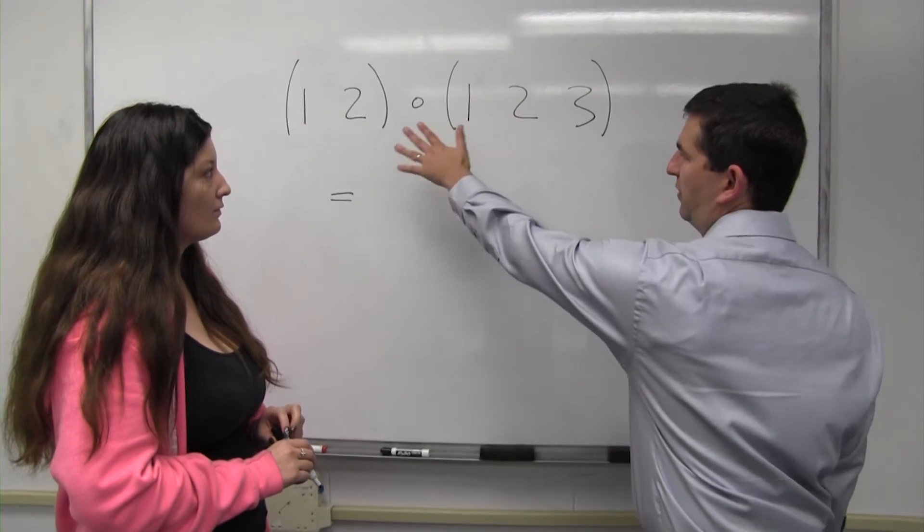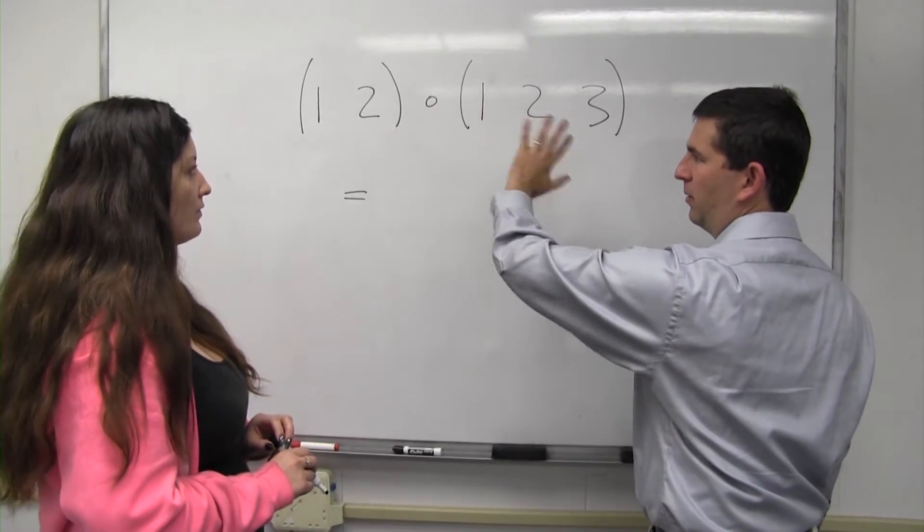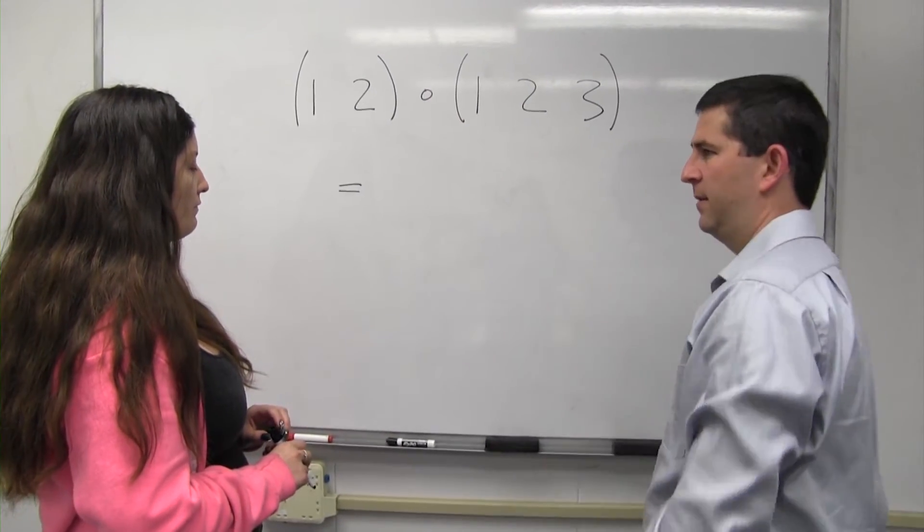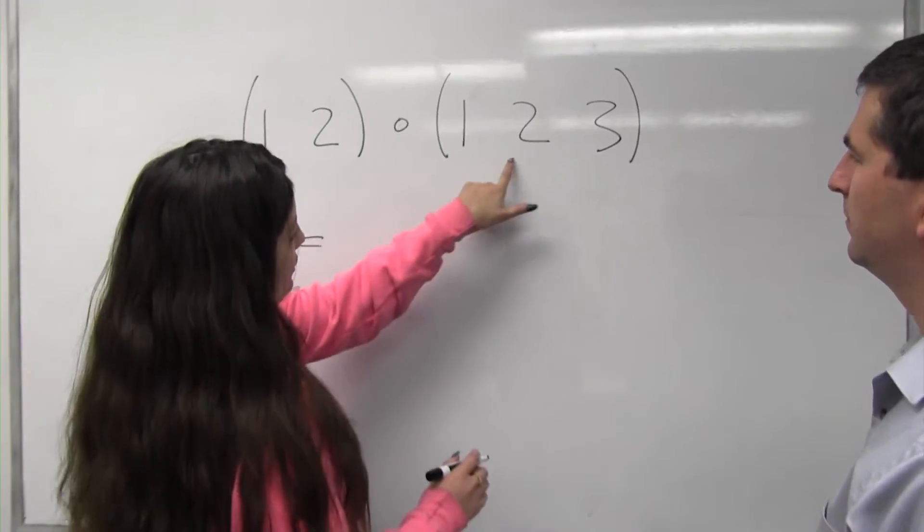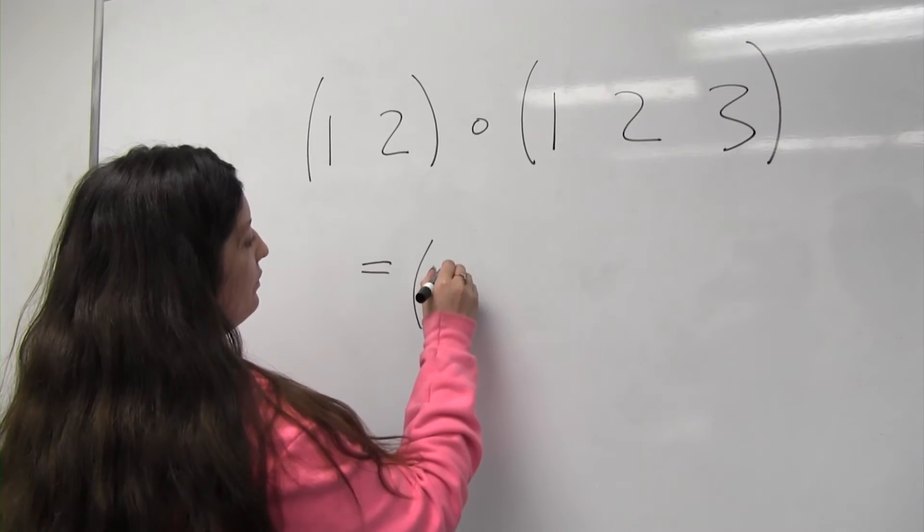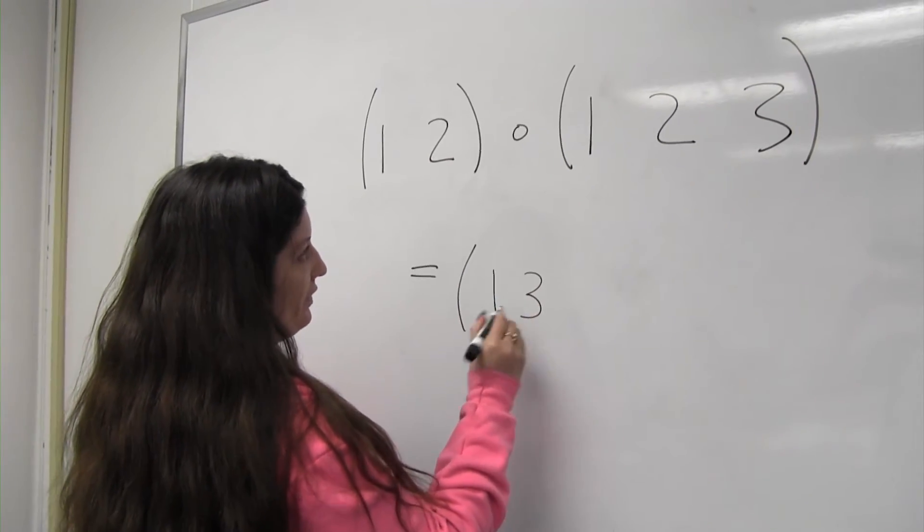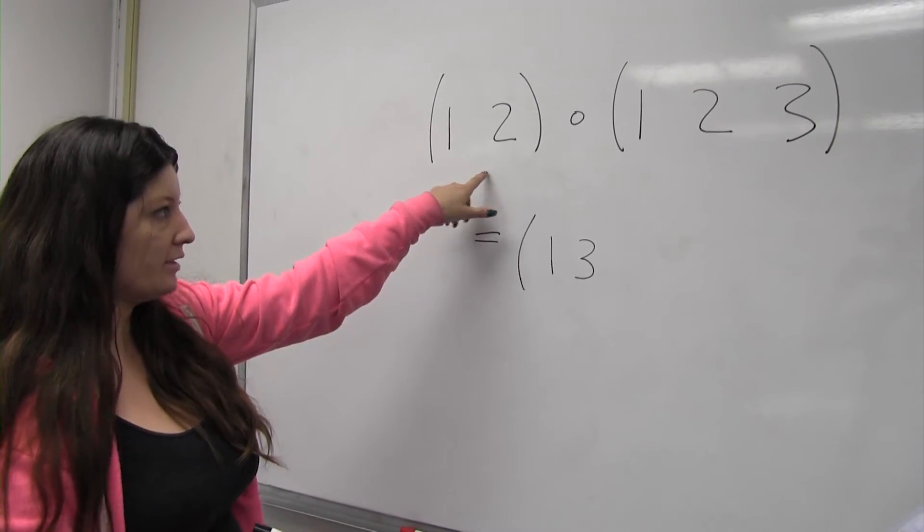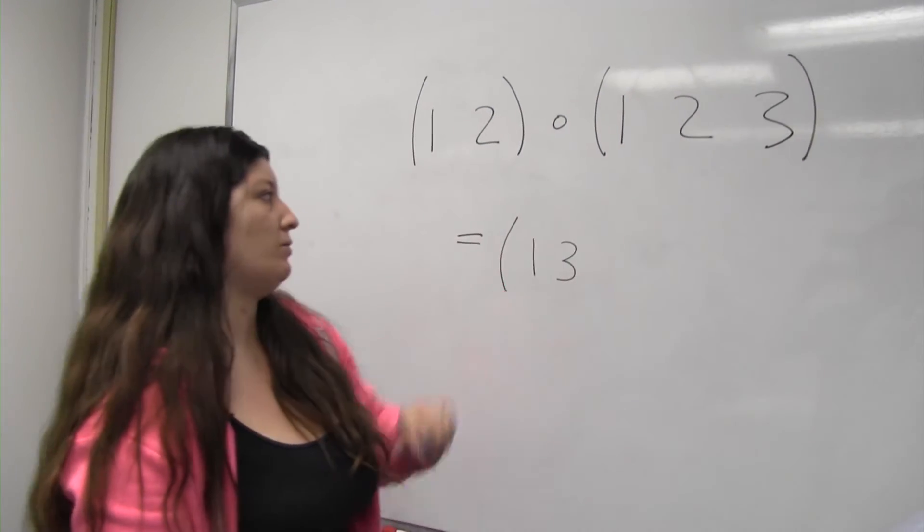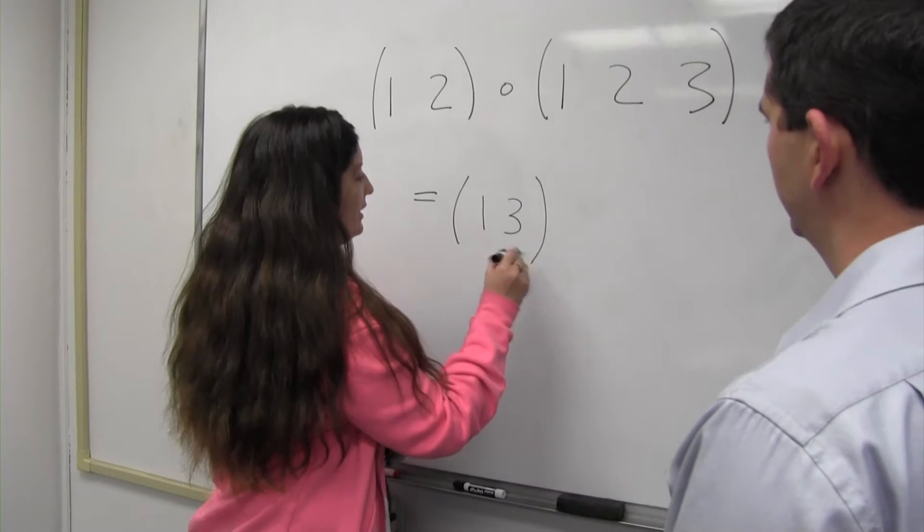So if we compose these two permutations, which permutation do you get? Okay, 1 goes to 2, and 2 goes to 3, so 1 goes to 3. And then here, 3 is fixed, and then 3 goes back to 1. So we can close this.